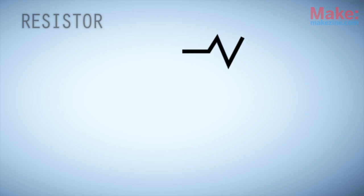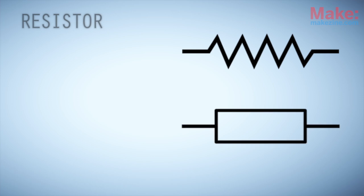A resistor's symbol usually consists of a single zigzagging line. It's also sometimes represented as a simple rectangle, with a terminal lead at either end.